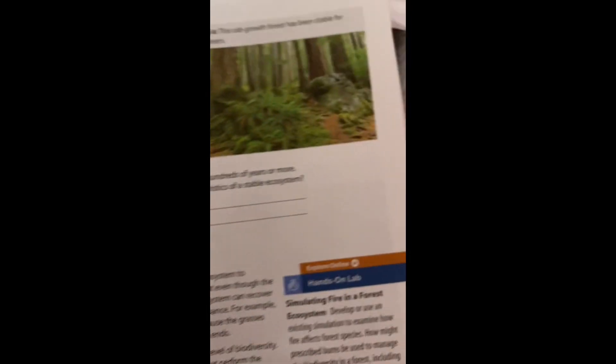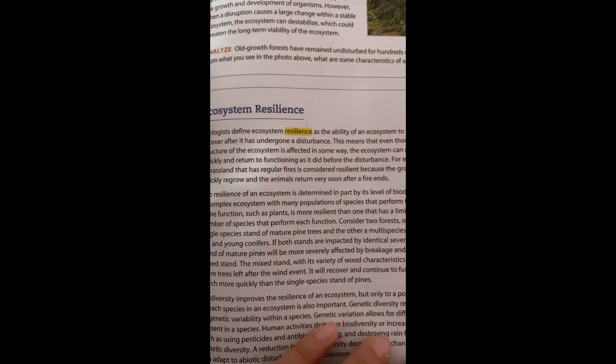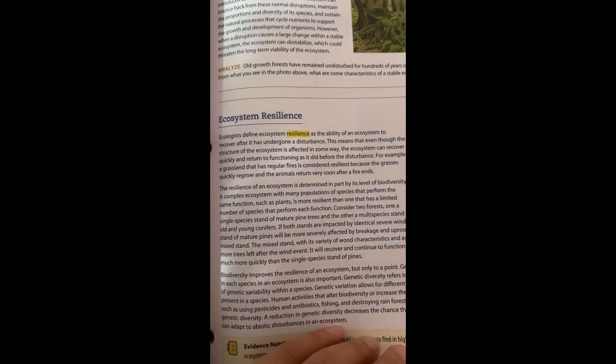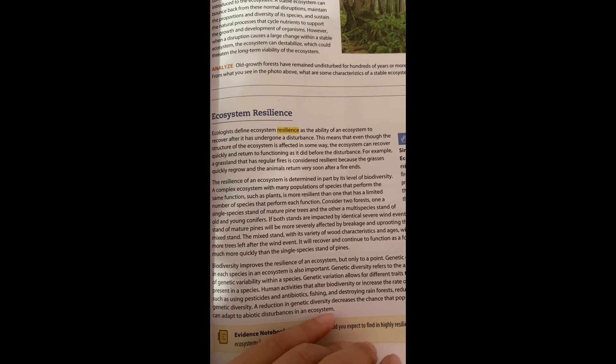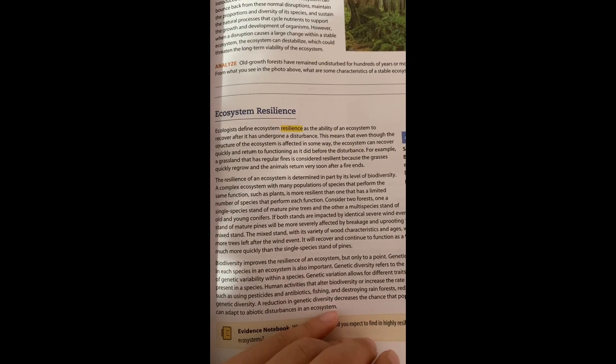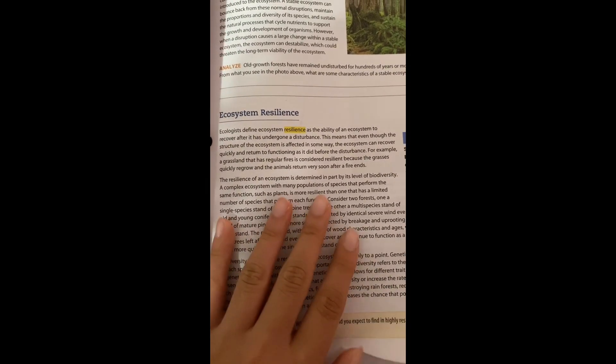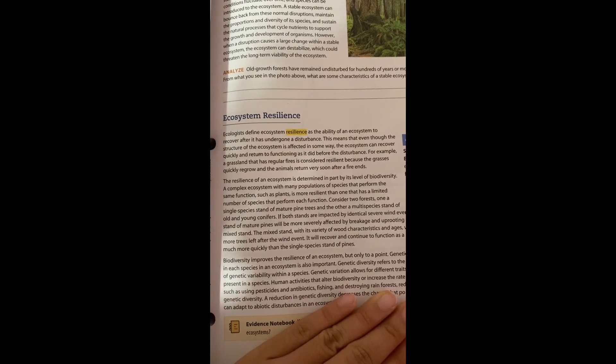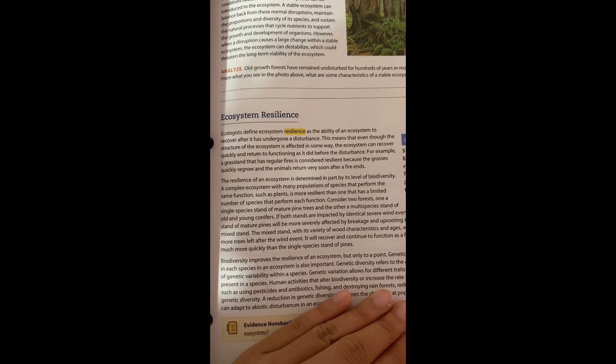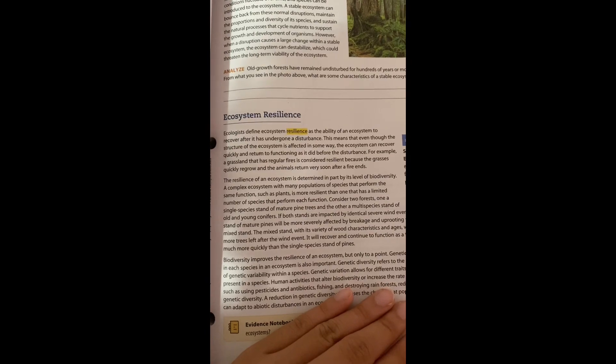Ecosystem Resilience is the ability of an ecosystem to recover after it has undergone disturbance. A resilient ecosystem can recover quickly and return to functioning as it did before disturbance. Grassland that experiences regular fires is considered resilient because the grass quickly regrows.